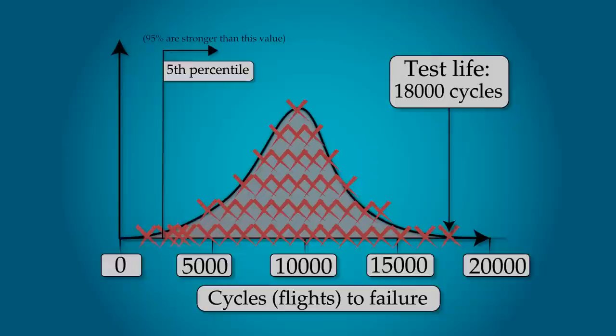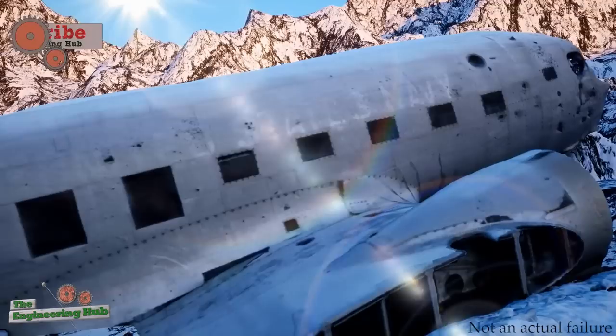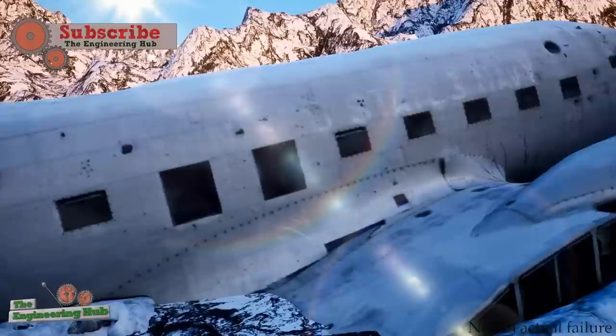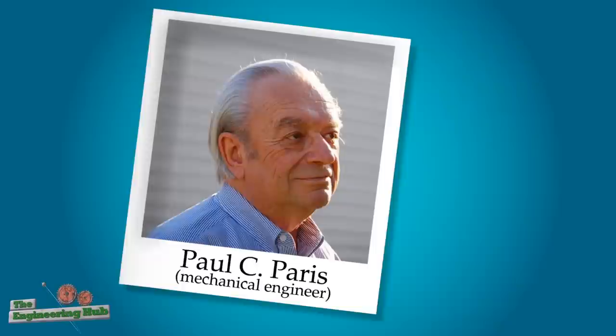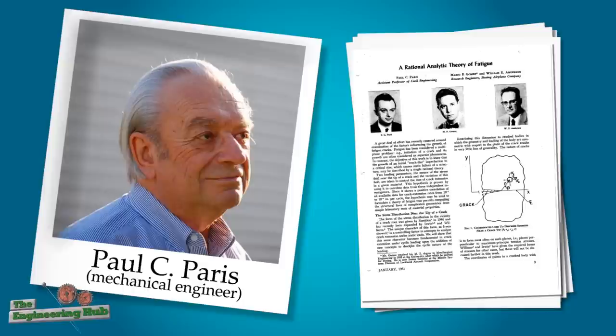As a result of the failures and consequent investigation, huge leaps were made in better understanding the fatigue and fracture of components. In the years following the accidents, a young American engineer by the name of Paul C. Paris worked as a faculty associate at Boeing studying the Comet failure. Paris went on to publish the famous Paris law, which is extensively used for estimating the life of components due to fatigue cracking and has saved millions of lives.